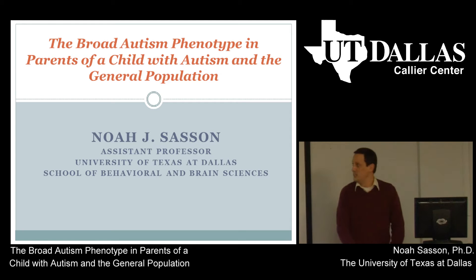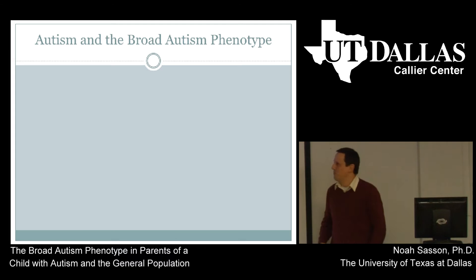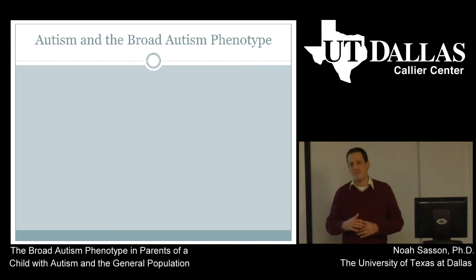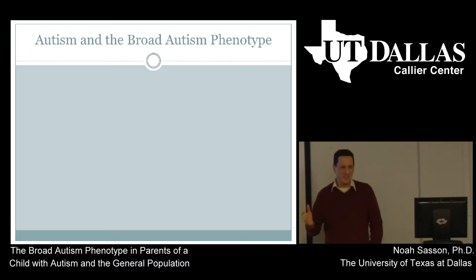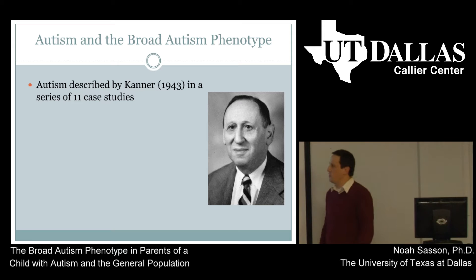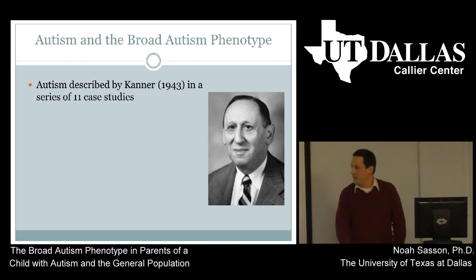Most of you in this room are familiar with autism. I'm not going to go into too much detail here. But I want you to realize that this concept of the broad autism phenotype, which very briefly speaks to subclinical levels of autism, mild symptoms of autism that don't meet the threshold for clinical diagnosis, has been discussed clinically since Leo Kanner first described autism in his first paper in 1943. In that famous paper covering a series of 11 case studies, he described autism as a disturbance of affective contact — that's part of the title of the paper.